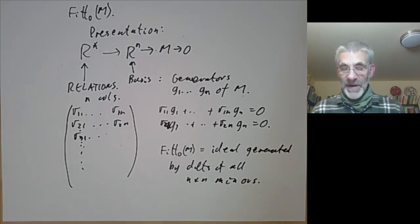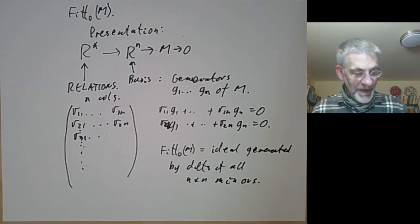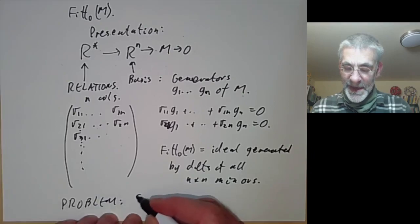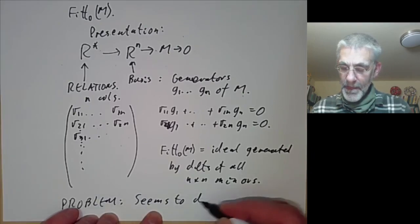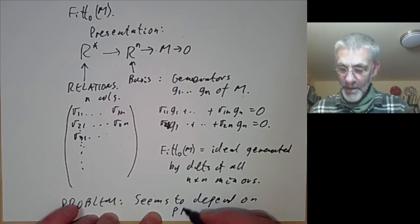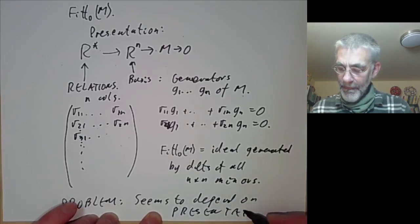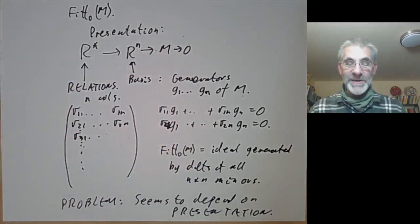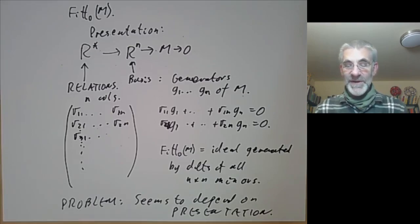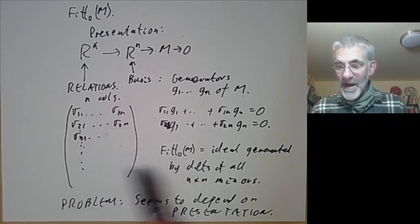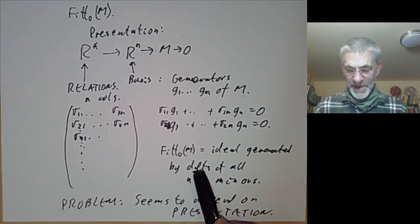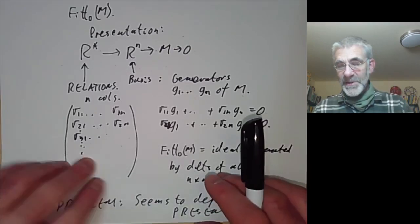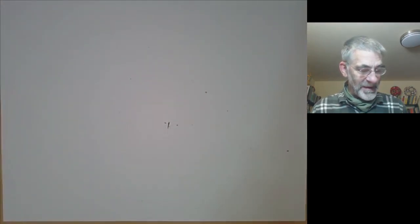There's one obvious problem: this definition seems to depend on the presentation. A module M will have many different presentations, leading to completely different matrices and different collections of determinants. Are they really going to give the same fitting ideal? Well, the answer is yes — you do end up with the same fitting ideal. Let's explain why.